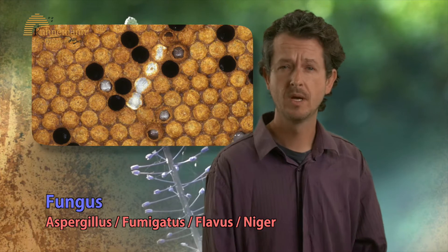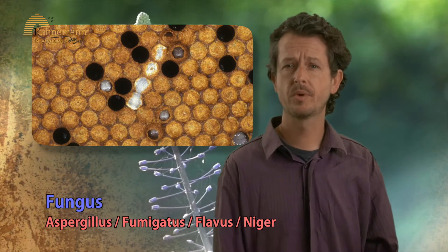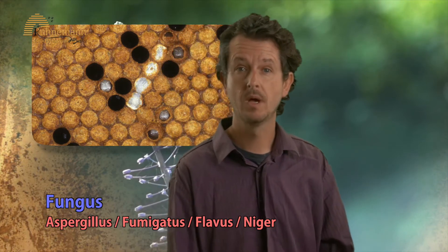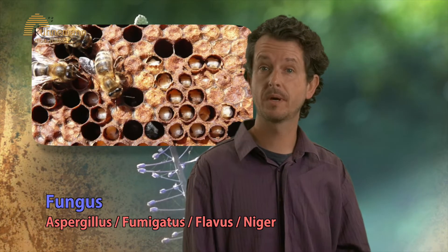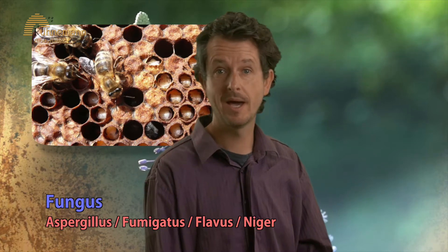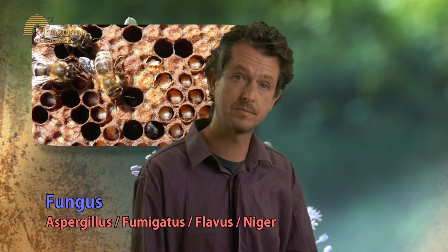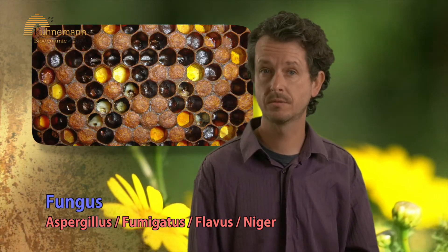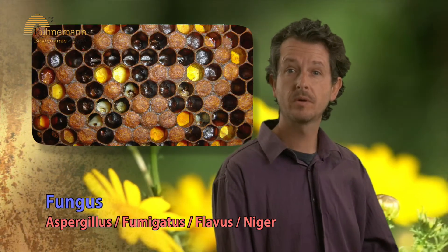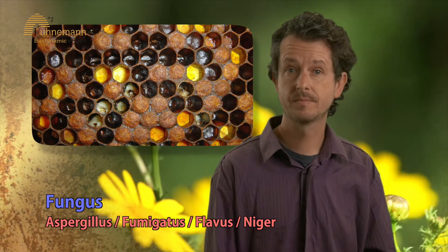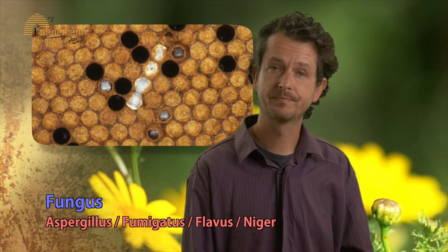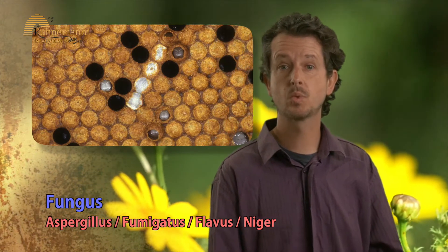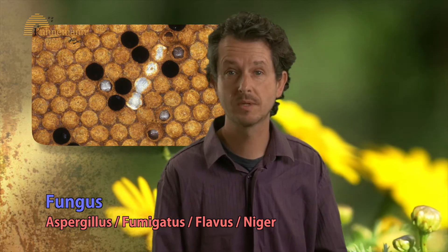Aspergillus. This fungus operates in three different systems of the bee organism. The first one is called Aspergillus fumigatus and attacks the digestive system. Aspergillus flavus attacks the fluid circulation. And Aspergillus niger attacks the immune system. The way to identify this fungus is when the brood becomes dark and fossilized.